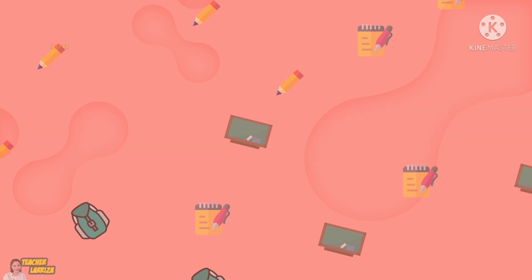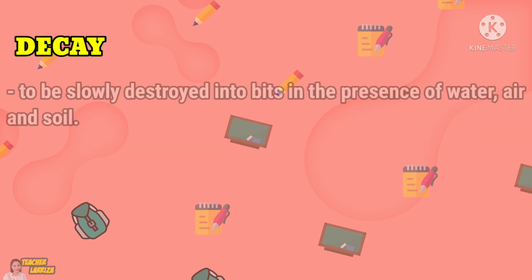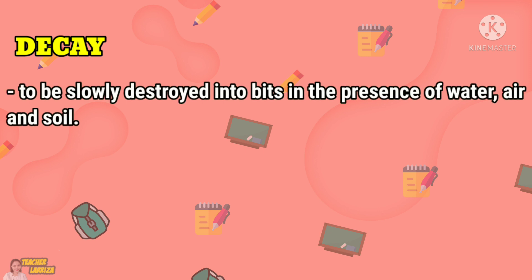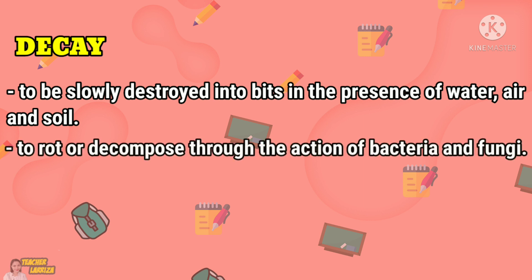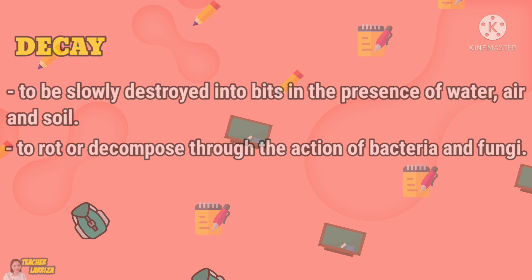But what do we mean by decay? Decay means to be slowly destroyed into bits in the presence of water, air, and soil. It also means to rot or decompose through the action of bacteria and fungi.